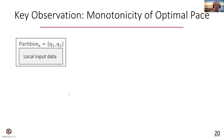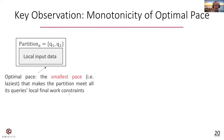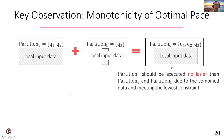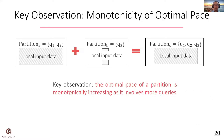Our key observation is that there is a monotonicity of the optimal pace for a partition. The work of a partition depends on its pace. Therefore, for each partition, the optimal pace is defined as the smallest pace — the laziest one — that makes the partition meet all its query's local final work constraints. If we consider merging two partitions A and B into a new partition C, partition C should be executed no lazier than partitions A and B because it needs to do the combined work and meet the lowest constraint. Therefore, the optimal pace of a partition is monotonically increasing as it involves more queries. This inspires us to build the split from bottom to top and monotonically find the optimal paces as we merge partitions.